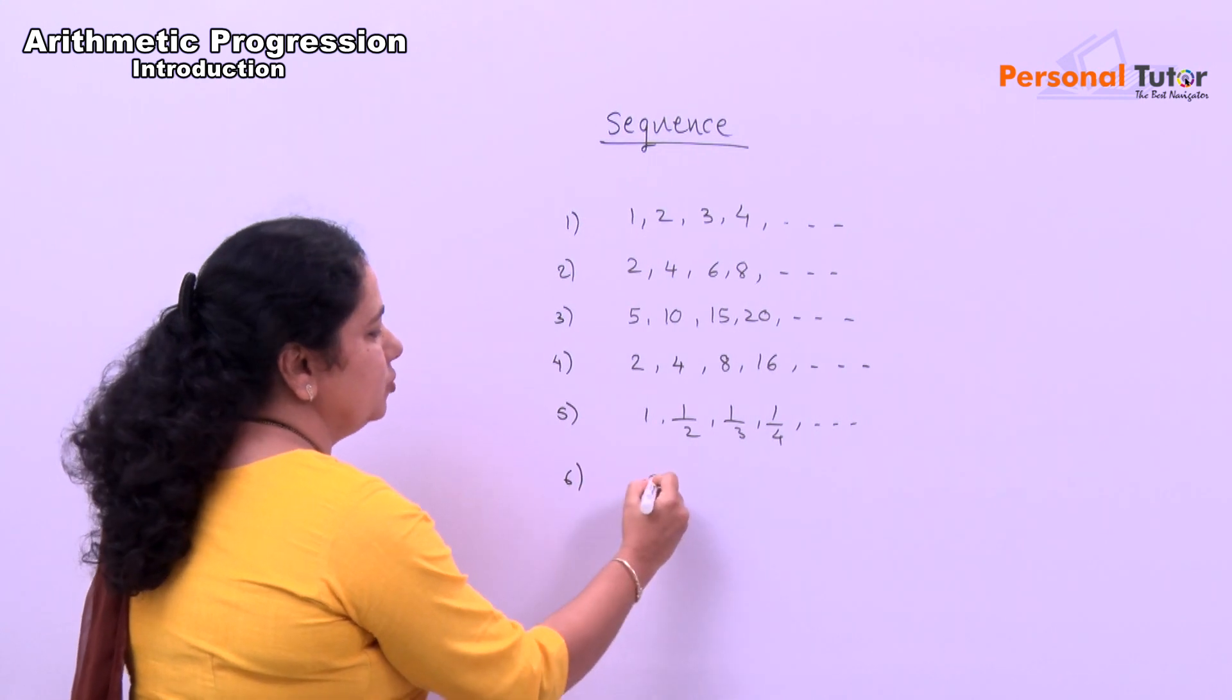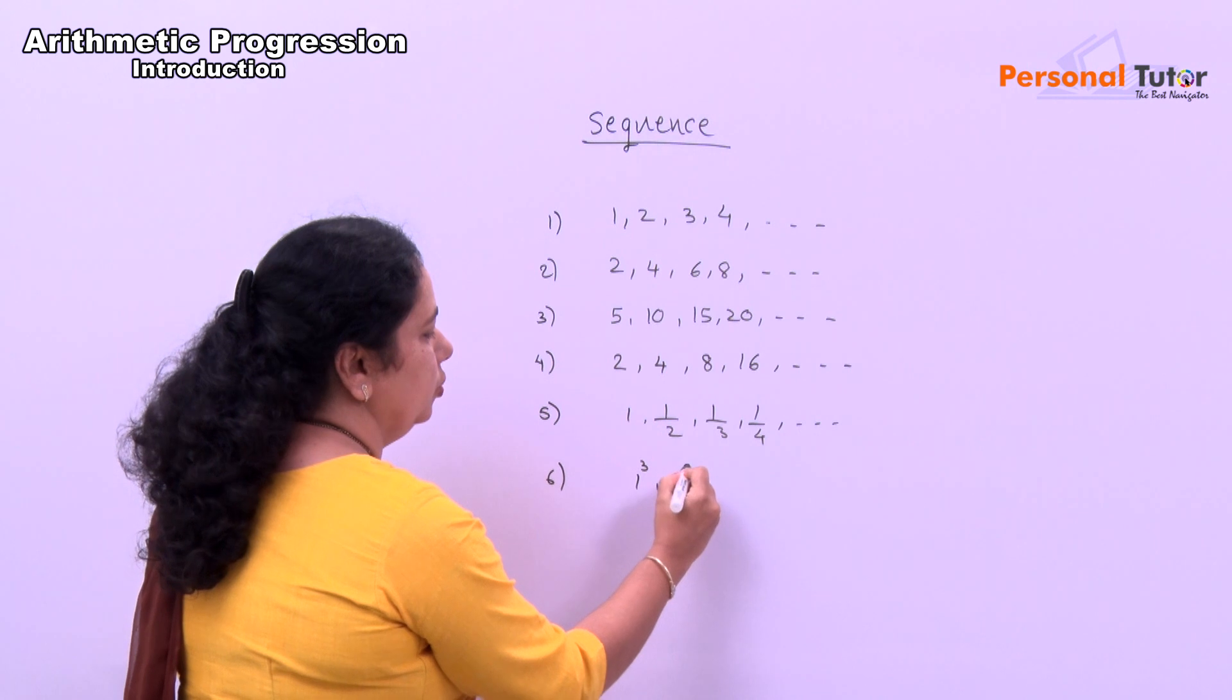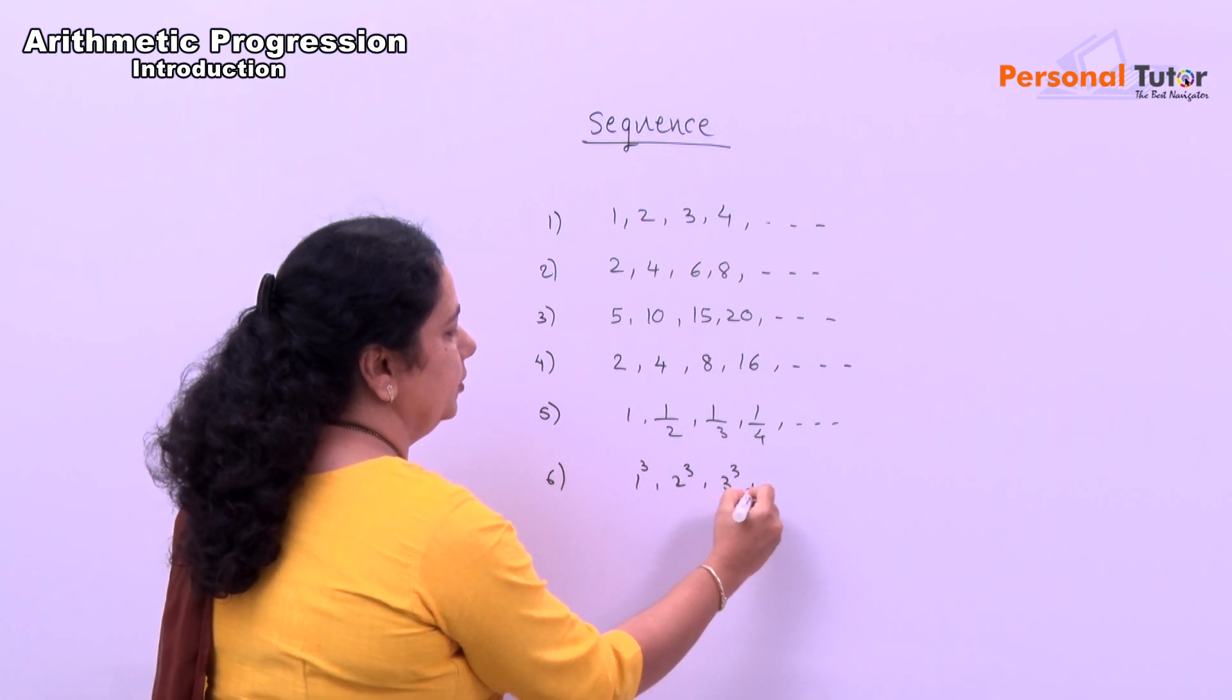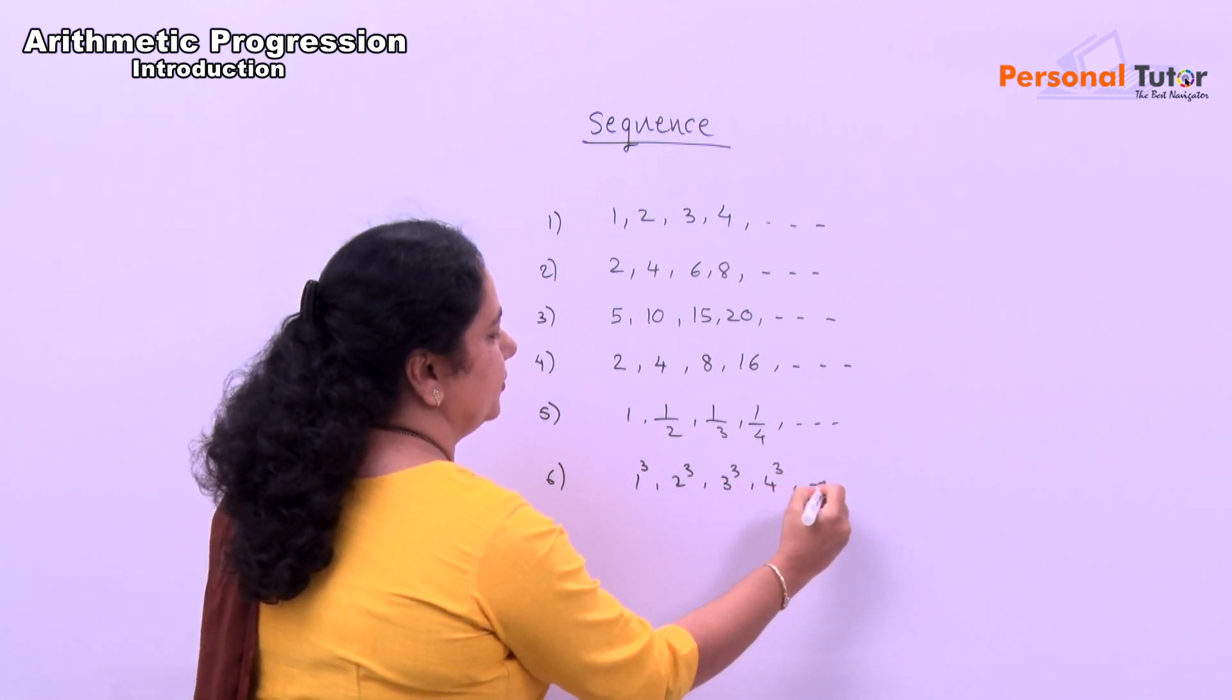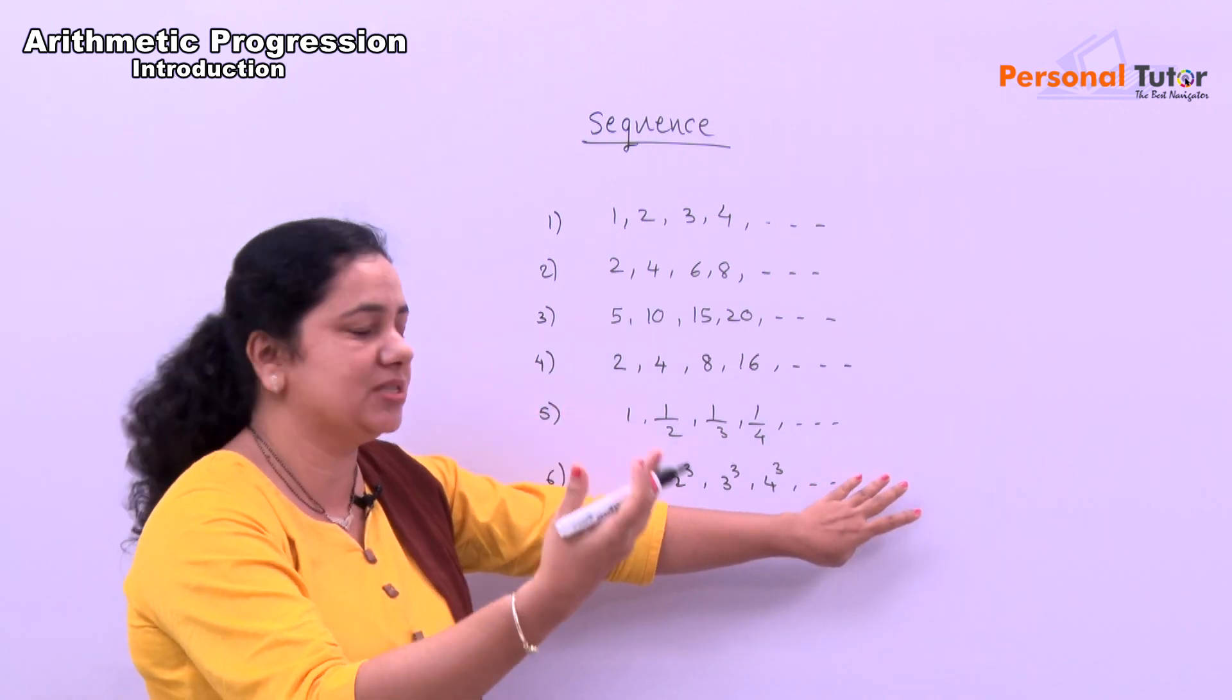Here, suppose number is 1 cube, 2 cube, 3 cube, 4 cube. Just tell me what is next number? Next number is 5 cube, 6 cube, 7 cube like this.